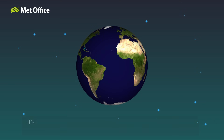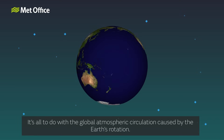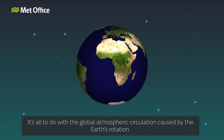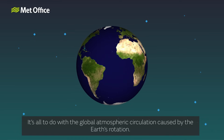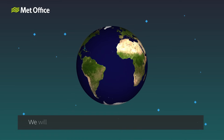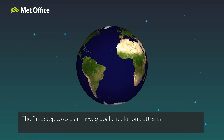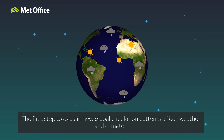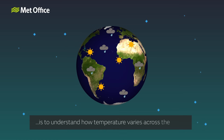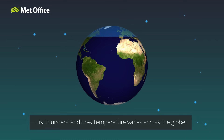It's all to do with the global atmospheric circulation caused by the Earth's rotation. We will look at what this is over a series of short explainer videos. The first step to explain how global circulation patterns affect weather and climate is to understand how temperature varies across the globe.